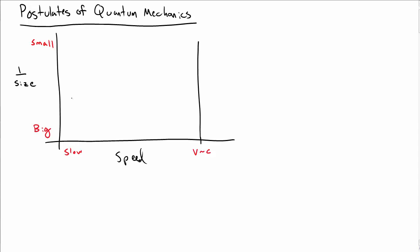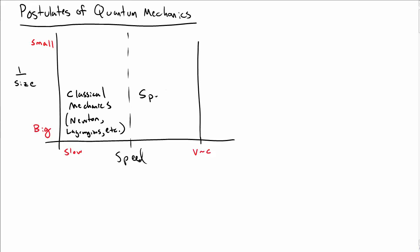Let's make a rough division of physics according to this graph, with speed on the horizontal axis and one over size on the vertical axis. Down in the left-hand corner, at slow speeds and large objects, we have classical mechanics — things like Newtonian mechanics, Lagrangian mechanics, forces, energy, all of those classic things.